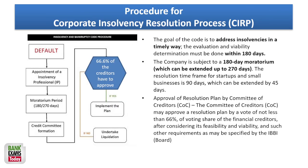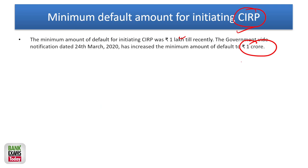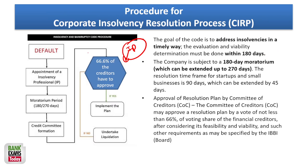This is the CIRP process — a question repeated most of the time in exams. The simple process: once the default occurs and the debtor is unable to pay off loans, an insolvency professional is appointed. Then a moratorium period is given — generally 180 days, which can be extended by 90 days to a maximum of 270 days.